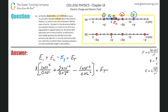Plugging in k = 8.99×10⁹, we calculate: 8.99×10⁹ times (1×10⁻⁶/0.02² plus 2×10⁻⁶/0.03² minus 1×10⁻⁶/0.06²). The result is approximately 4.00×10⁷ newtons per coulomb. Those are the units of electric field, and that's the answer for part A.